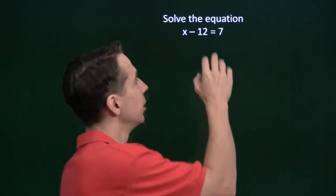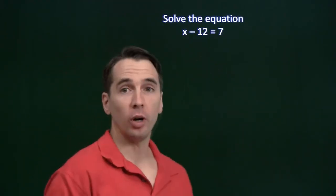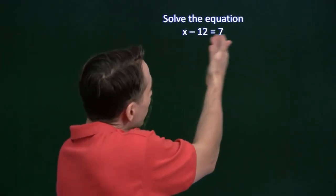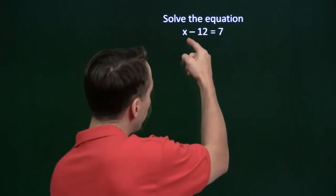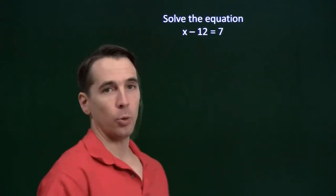We're going to start with a little warm-up problem here. Solve the equation x minus 12 equals 7. What we mean by solve the equation is find every value of the variable, that's x here, that makes this equation true.